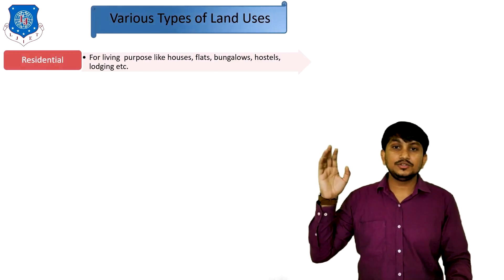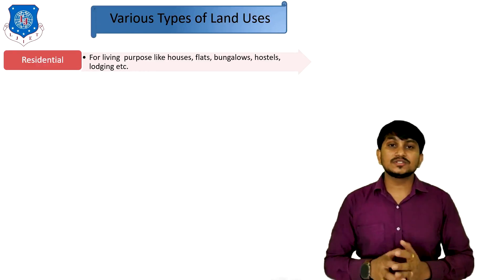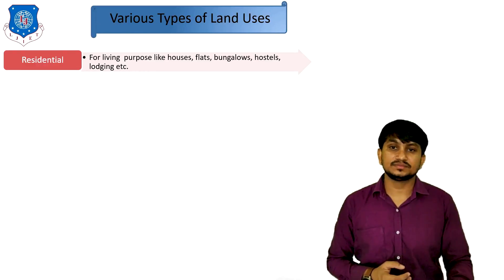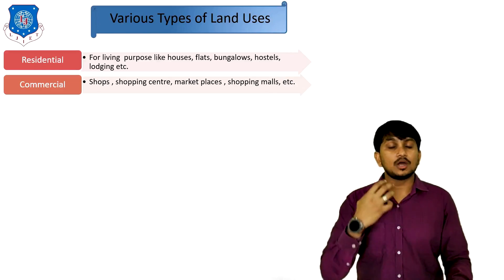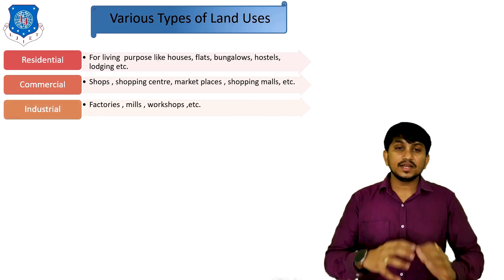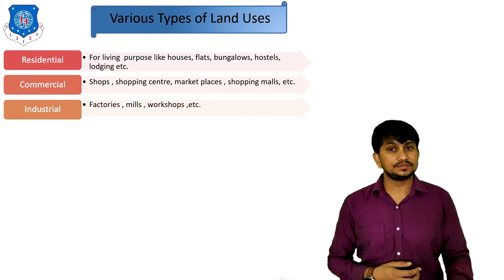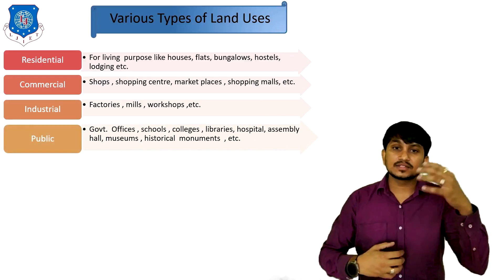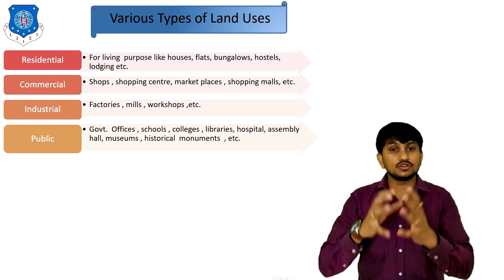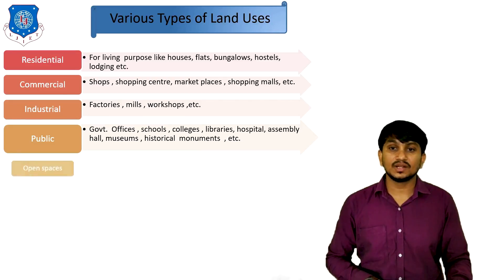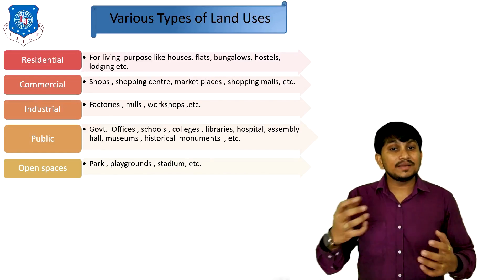Now let's see the types of land uses in a town. First is residential use — used for living purposes like houses, flats, bungalows, hostels, lodging, etc. Second is commercial use — for shops, shopping centers, marketplaces, shopping malls, etc. Third is industrial use — factories, mills, workshops, etc. Fourth is public buildings — government offices, schools, colleges, libraries, hospitals, assembly halls, museums, historical monuments, etc.